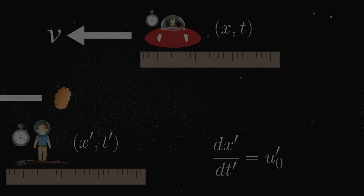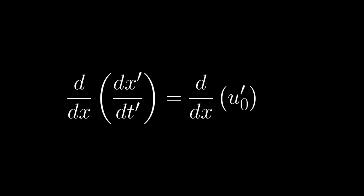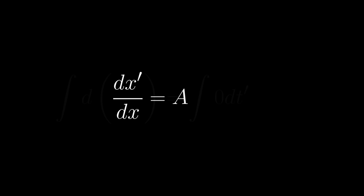Now watch what happens when we take the derivative with respect to Annie's position. According to the law of inertia, the rock's velocity, u sub 0 prime, is a constant throughout space and time, and so the derivative naturally evaluates to 0. If we then swap the denominators and calculate the antiderivative, we quickly find that the derivative of x prime with respect to x is some unknown constant a.